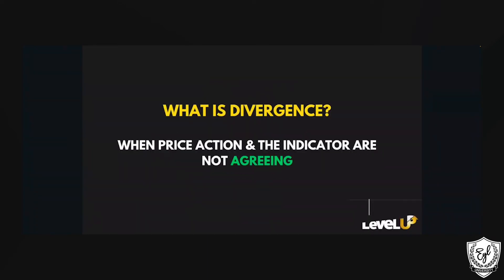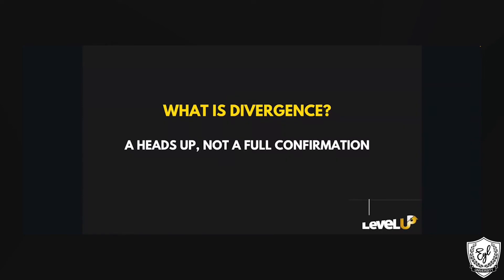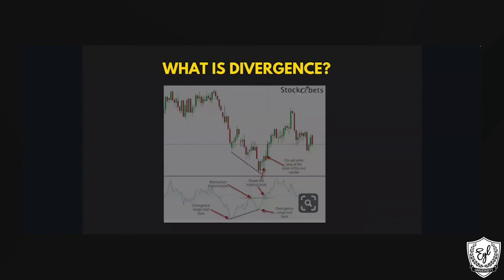What is a divergence? Divergence is when the price action and the indicators are not agreeing. A divergence is just a heads up — it's not a full confirmation. It's just a heads up that the momentum might change, that the trend may end soon and there may be a reversal. Trading divergences can definitely help us when it comes to buying the dip and having good entries for any reversals across any different financial industries.